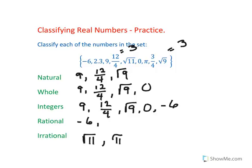We have negative 6, 2.3, 9, 12 over 4, 0, 3 fourths, and the square root of 9.